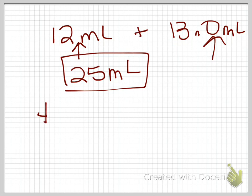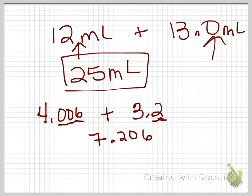If you have 4.006 plus 3.2 of anything. When you add this together, it adds to be 7.206. But how many sig figs am I allowed in my answer? This one has three places past the decimal. This one only has one place past the decimal. So I'm only allowed one place past the decimal, because I'm adding or subtracting. So I must round this to 7.2.